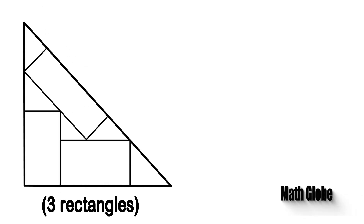First, let's redraw the shape here and take a closer look at the large triangle. Note that this is an isosceles right triangle, and also the base angles are the same and 45 degrees.